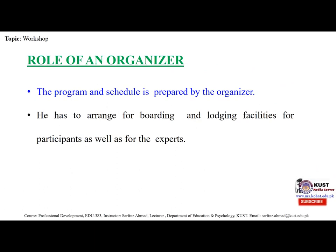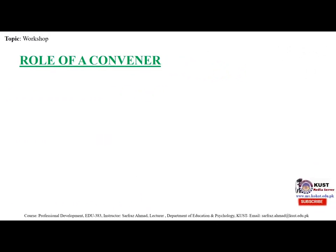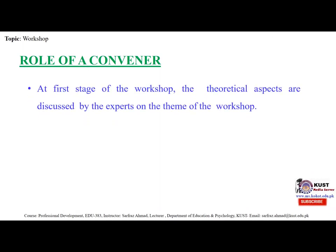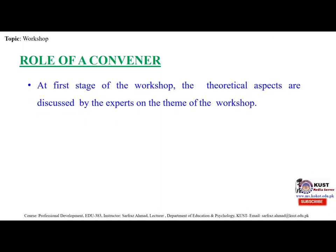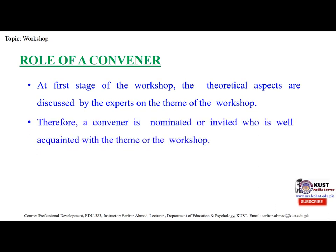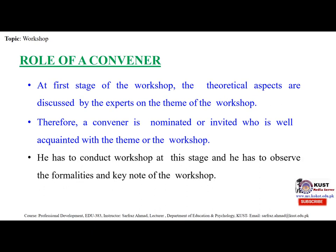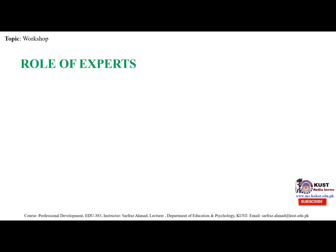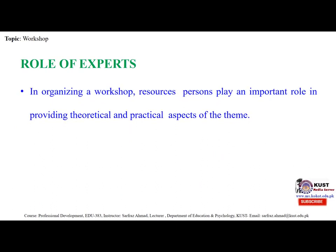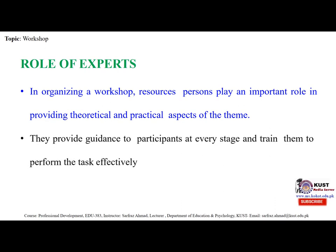The role of an organizer: the program and schedule is prepared by the organizers, and they arrange boarding and lodging facilities for the participants as well as for the experts. The role of convener: at the first stage of the workshop, the theoretical aspects are discussed by the expert on the theme of the workshop. Therefore a convener is nominated or invited who is well acquainted with the theme. He conducts the workshop at this stage, observes the formalities and keynote of the workshop. The role of experts: resource persons play an important role in providing theoretical and practical aspects of the theme, and provide guidance to participants at every stage, training them to perform the task effectively.